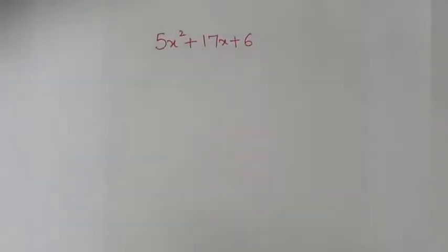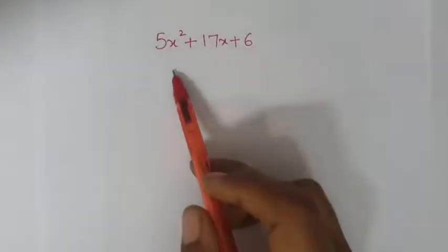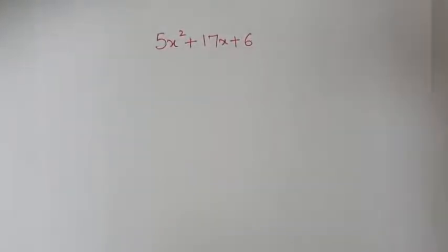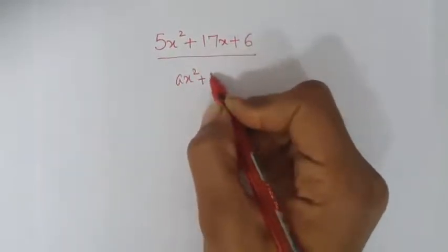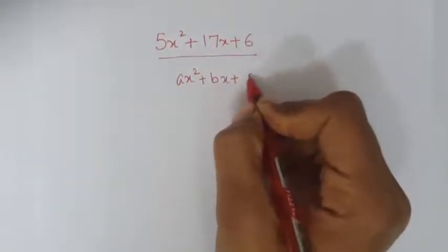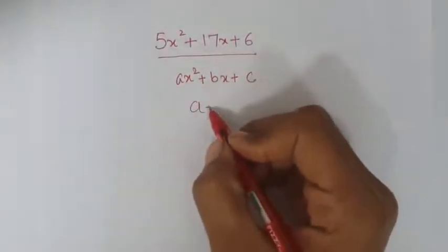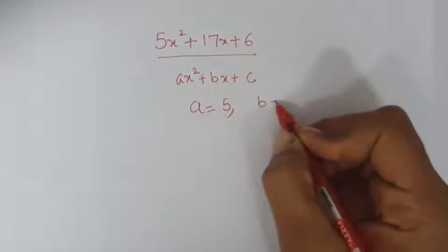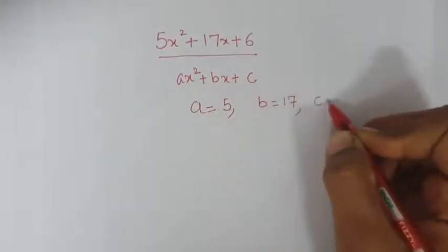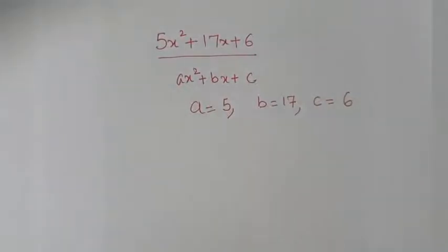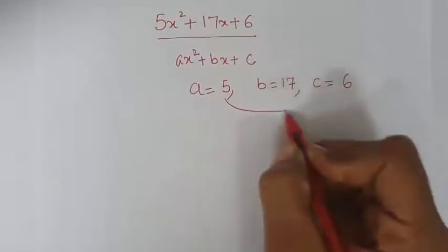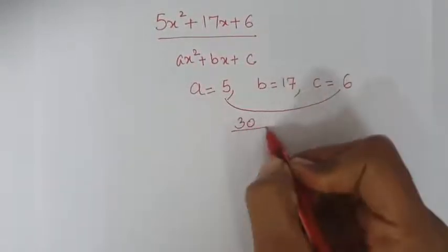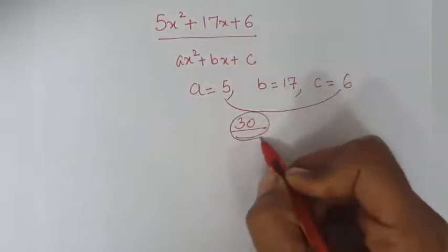The next question is: 5x² plus 17x plus 6. Again compare it with Ax² + Bx + C. So A = 5, B = 17, and C = 6. Now A into C: 5 × 6 = 30. We have to make the factors of 30.